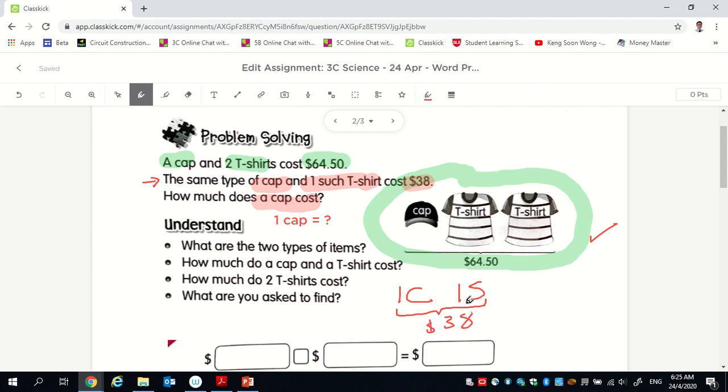So if I want to find out how much is one cap, obviously you can't find the answer straight away. But you need to make use of this number, $64 and $38, to find one cap. So I'm not gonna do for you. I'm gonna let you try, but I'm just gonna give you some hint. You realize one cap, two t-shirts, $64.50. You realize one cap, one t-shirt is $38. So you realize the difference, just going to cut this like that, the difference is actually one t-shirt.